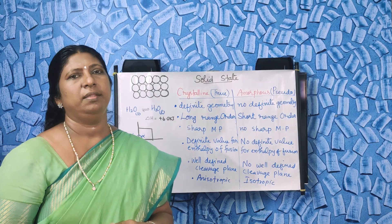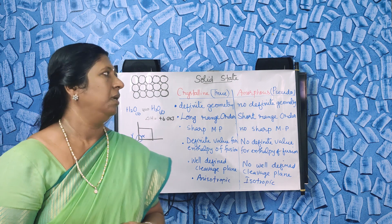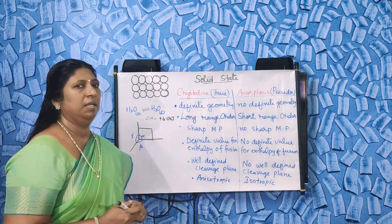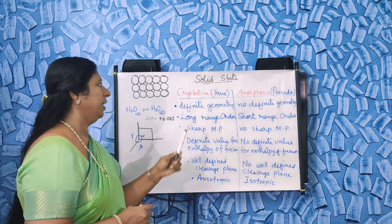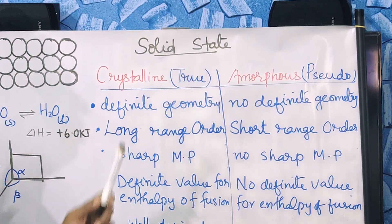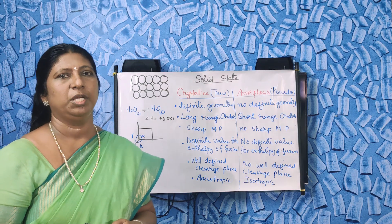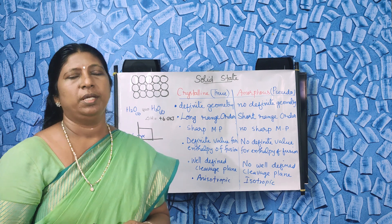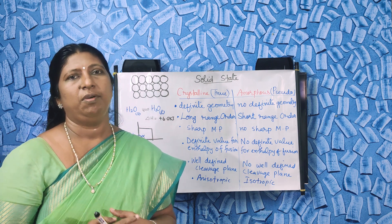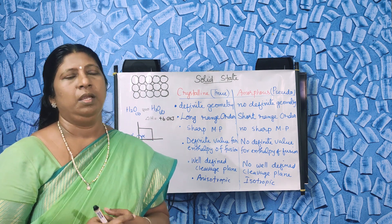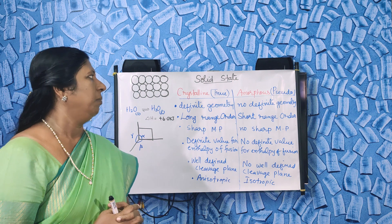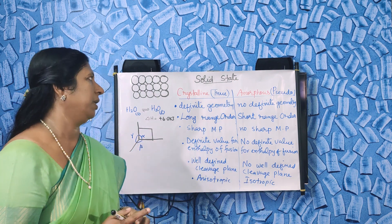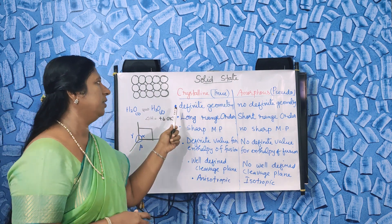What are the other characteristics that differentiate them? First, crystalline substances have definite geometry. Sodium chloride, cane sugar, etc. have well-defined geometry. But plastic, rubber, etc. have no definite geometry. So the first difference is: crystalline substances have well-defined geometry and amorphous substances have no definite geometry.